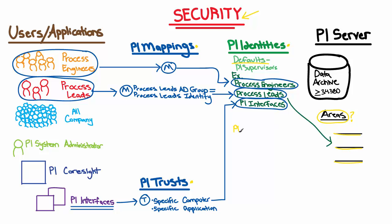You might have also heard about PI users and groups and be wondering how do they fit into this map, so we'll look at that. And finally, we'll also look at why specifically we use those trusts for PI interfaces instead of mappings, and are there any other times when we should use PI trusts?